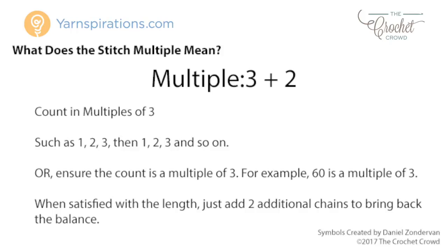If you prefer to count a larger number instead of doing 1, 2, 3 repeatedly, you can just use a calculator or your mind. Your larger number should be a multiple of three. So for example if you go to chain 60, 60 divided by 3 equals 20 multiple sets. The two chains at the end will then be added when you're done, and this will allow you to create your gutters or edges of your project easily.